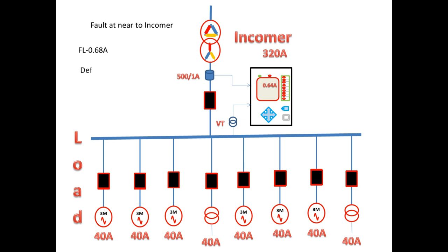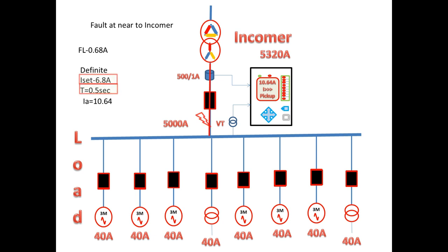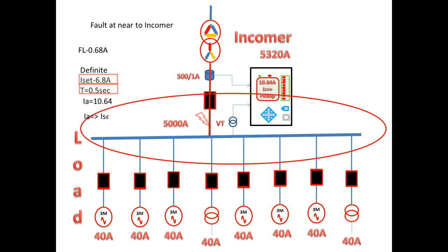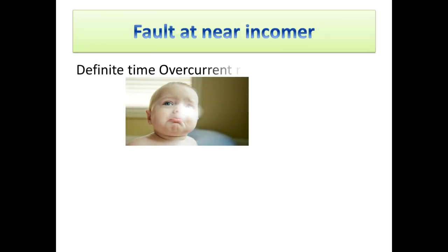Now we go to fault nearer to the incomer. I am going to check with a definite over current relay. For this I am going to take ISET equal to 6.8A and trip time is 0.5 seconds. We consider a sudden fault occurring nearer to the incomer. Due to this fault the fault current is 5000A. The actual current on the secondary is 10.6A, which is greater than ISET. The relay will pick up and wait 0.5 seconds before tripping. For this fault there is no other nearby breaker to isolate it — only the incomer has to trip. So the time delay here is not much necessary.